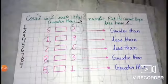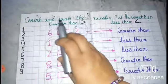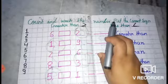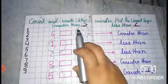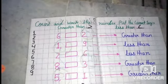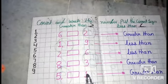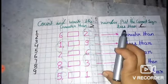Students, look at this exercise. Count and write the number. Put the correct sign — greater than or less than. I have written a few exercises, so put in the sign: greater than or less than.